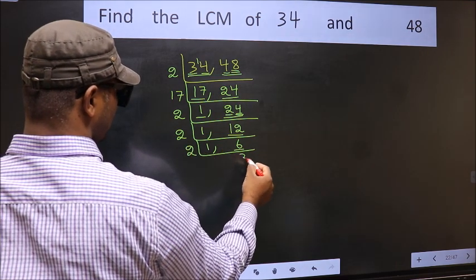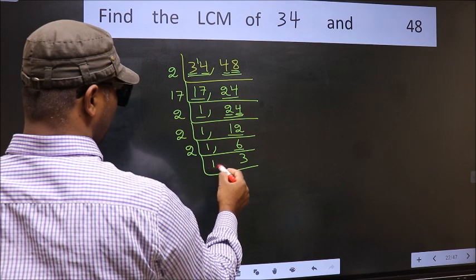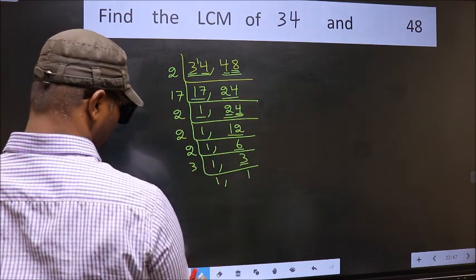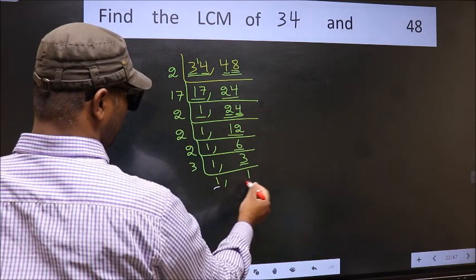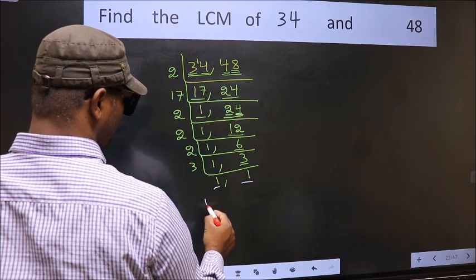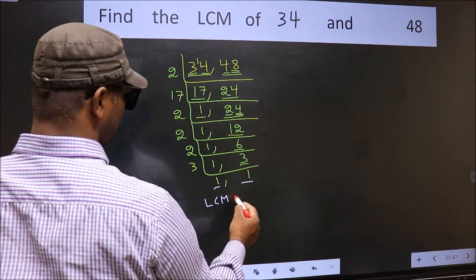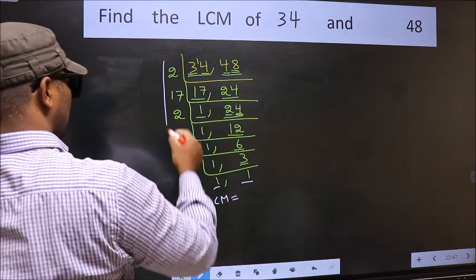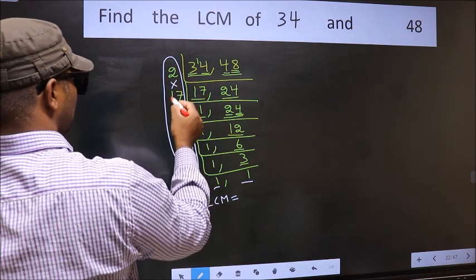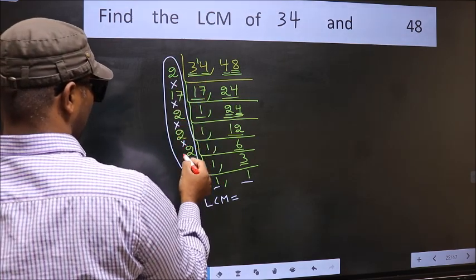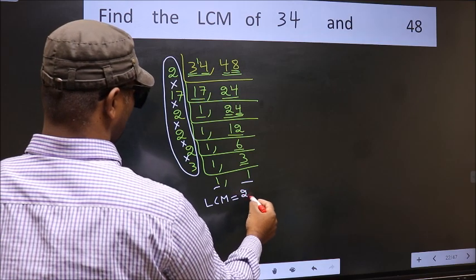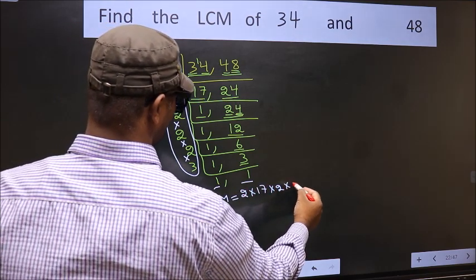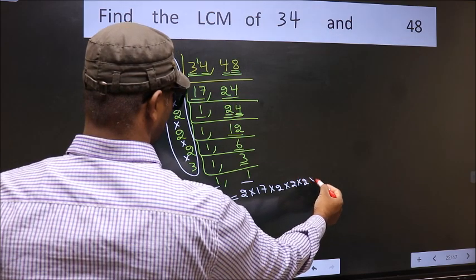6 divided by 2 gives 3. Now we have 3, which is a prime number, so 3 ones is 3. We got 1 in both places, so our LCM is the product of these numbers: 2 × 17 × 2 × 2 × 2 × 2 × 3.